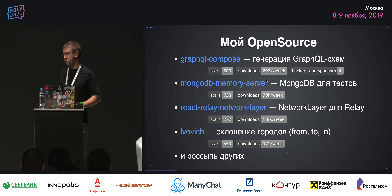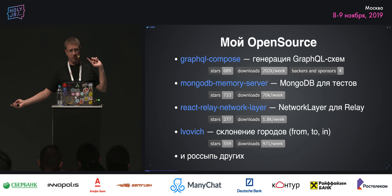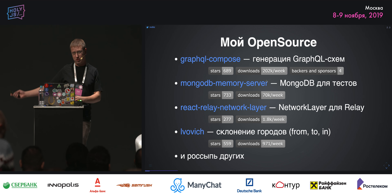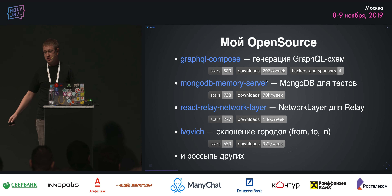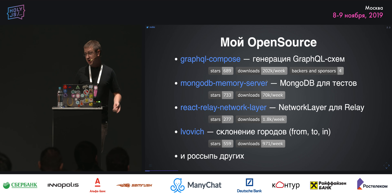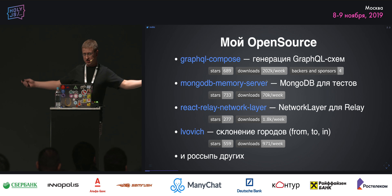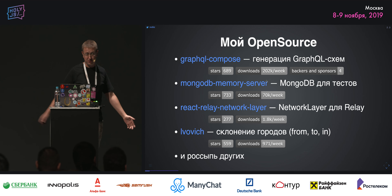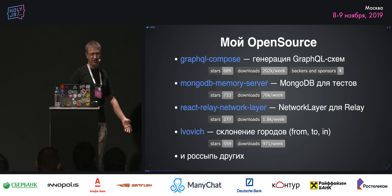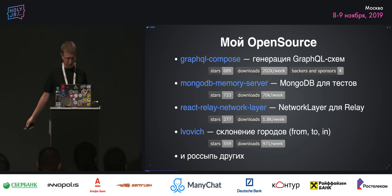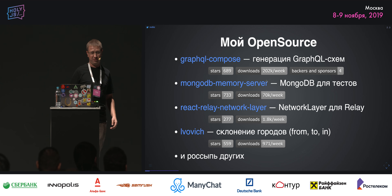Помимо этого у меня есть open source, в том числе библиотека GraphQL Compose, которая заточена под бэкенд и которую под капотом использует Gatsby. И мне даже задонатили 1000 долларов — первая тысяча с open source за три года мучений. Спасибо, Gatsby.